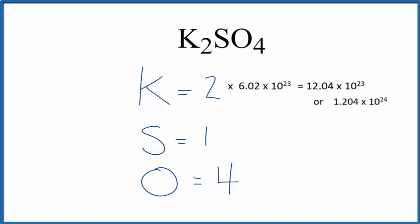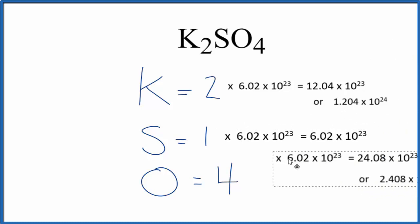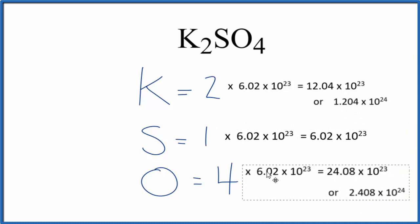For the sulfur, you just multiply that by Avogadro's number again. You get the same thing. And then for the oxygen, you would multiply four times Avogadro's number to find the number of atoms in K2SO4.